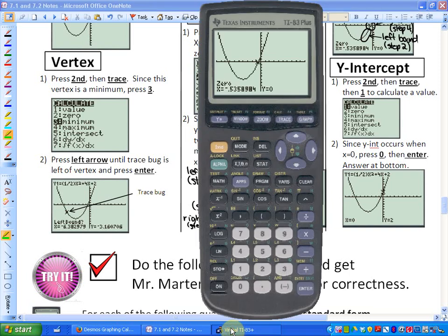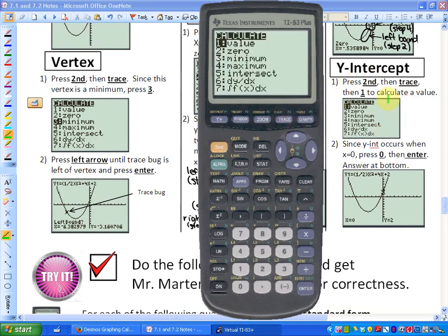And the y-intercept is very easy to calculate, because we can give this calculator, this graphing calculator, any input value and get an output. And the input value of a y-intercept is 0, because the value of x at a y-intercept is 0. So if I press 2nd, and then trace, as you can see here, we're going to press 1 to calculate a value, so here's 1. And finally it says, since the y-intercept occurs when x equals 0, press 0 and then enter. So I want to know what y equals when x equals 0, and y equals 2, so there's my y-intercept.